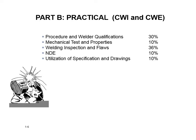Part B, the practical exam, breaks out as follows: procedures and welding qualifications are 30%, mechanical and test properties are 10%, and welding inspection and flaws are 36%. You need to know discontinuities, defects, and the terminology involved — overlap, undercut, convex, concave, fillet welds — all those words need to be an integral part of your vocabulary. Part B is usually the thing that trips people up.